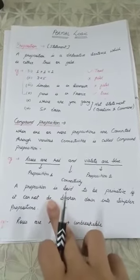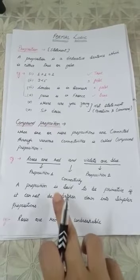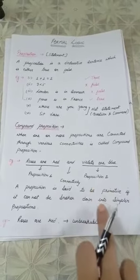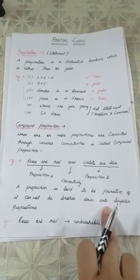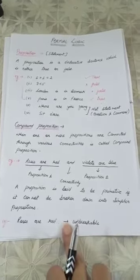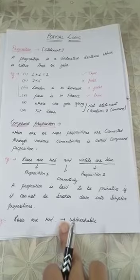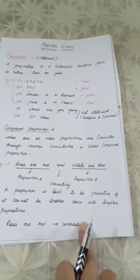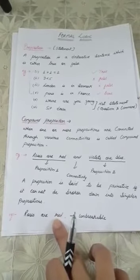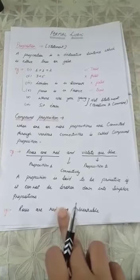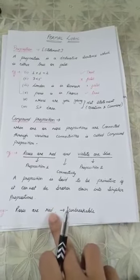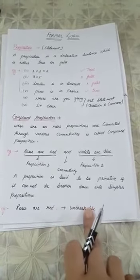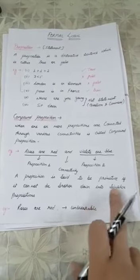The next part is when you have taken one proposition that is called primitive. If you cannot break it into simple propositions, that is called primitive. Like here, you can make it two simple propositions like 'roses are red.' This is unbreakable. When you only take 'roses are red' as a proposition, can you break it into two parts? No, this is not possible. Because 'roses are red' is a single unbreakable proposition, which is called a primitive proposition.